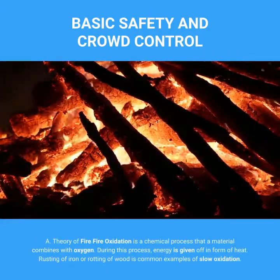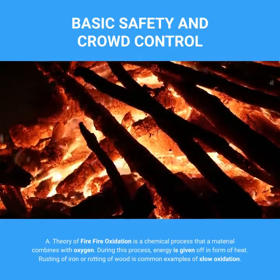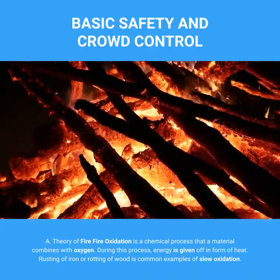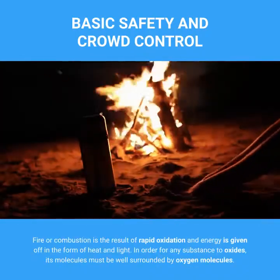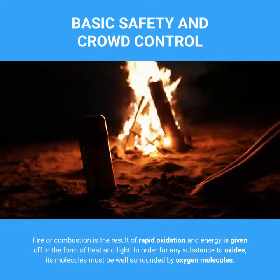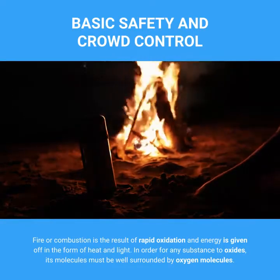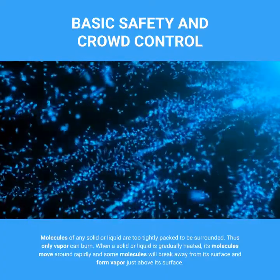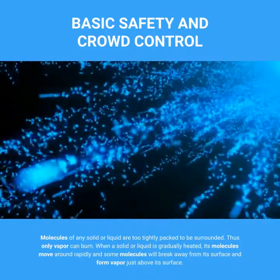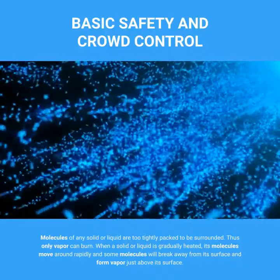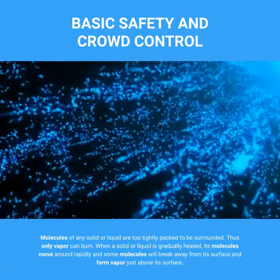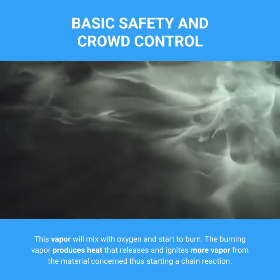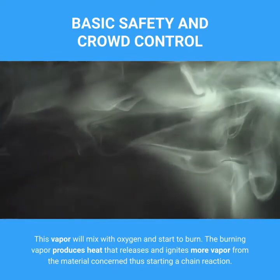Theory of Fire: Fire oxidation is a chemical process where a material combines with oxygen. During this process, energy is given off in the form of heat. Rusting of iron or rotting of wood are common examples of slow oxidation. Fire or combustion is the result of rapid oxidation, and energy is given off in the form of heat and light. In order for any substance to oxidize, its molecules must be well surrounded by oxygen molecules. Molecules of any solid or liquid are too tightly packed to be surrounded; thus only vapor can burn. When a solid or liquid is gradually heated, its molecules move rapidly and some molecules break away from its surface and form vapor just above its surface. This vapor will mix with oxygen and start to burn.